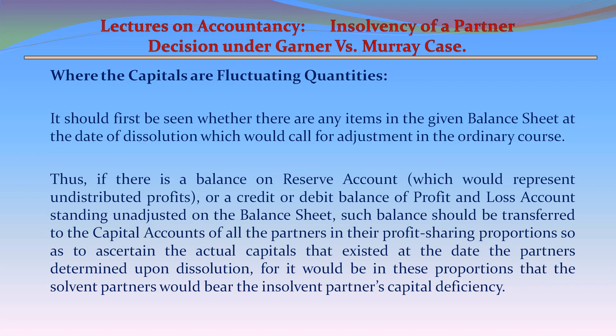It is necessary to ascertain whether the partners' capitals were fixed or floating quantities. It should first be seen whether there are any items in the balance sheet at the date of resolution which would call for adjustment. If there is a balance on reserve account representing undistributed profits, or a credit or debit balance of profit and loss account standing unadjusted, such balances should be transferred to the capital accounts of all the partners in their profit-sharing proportions.